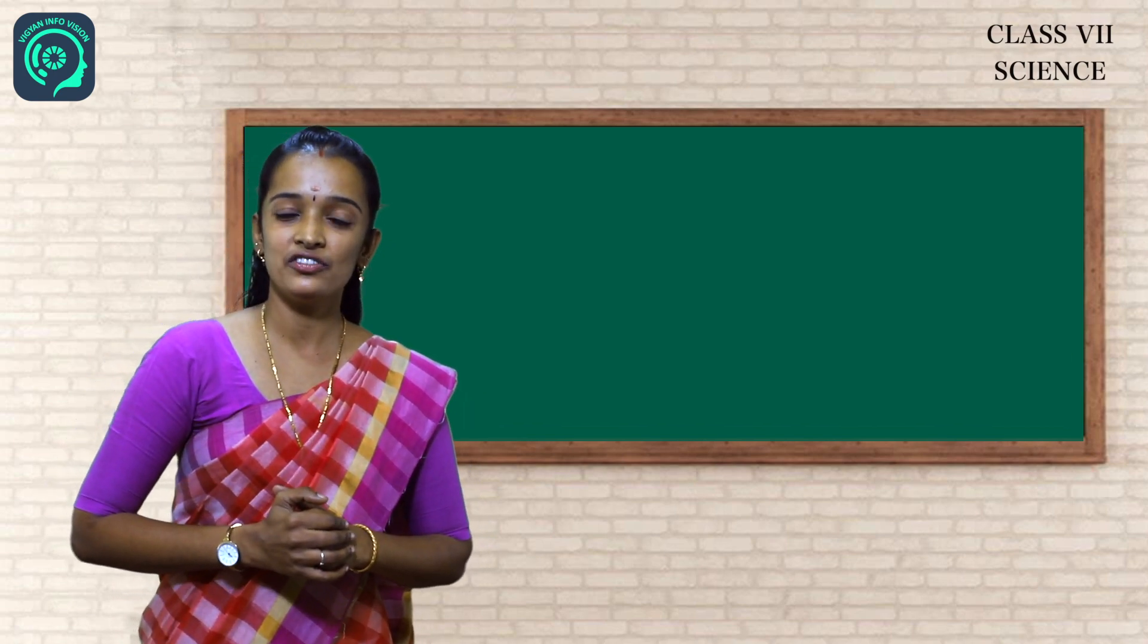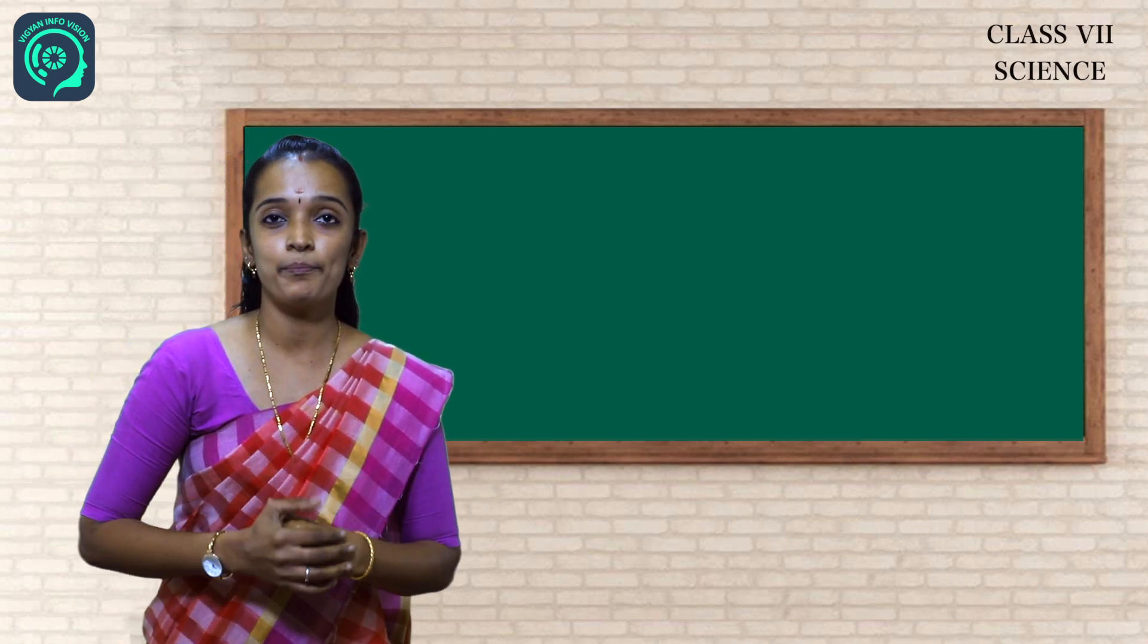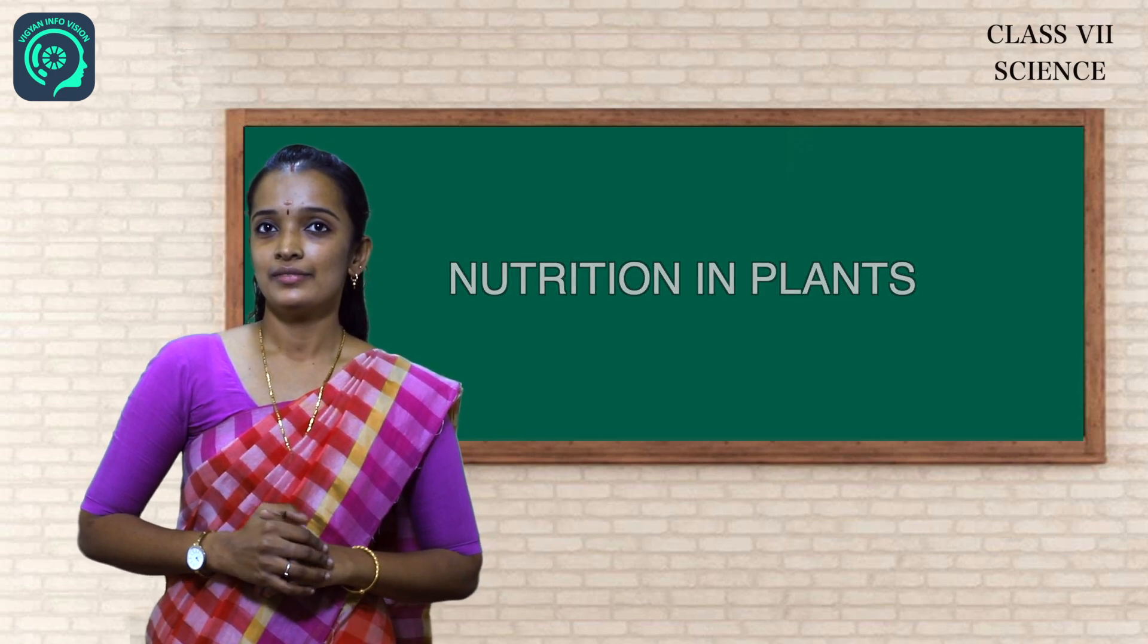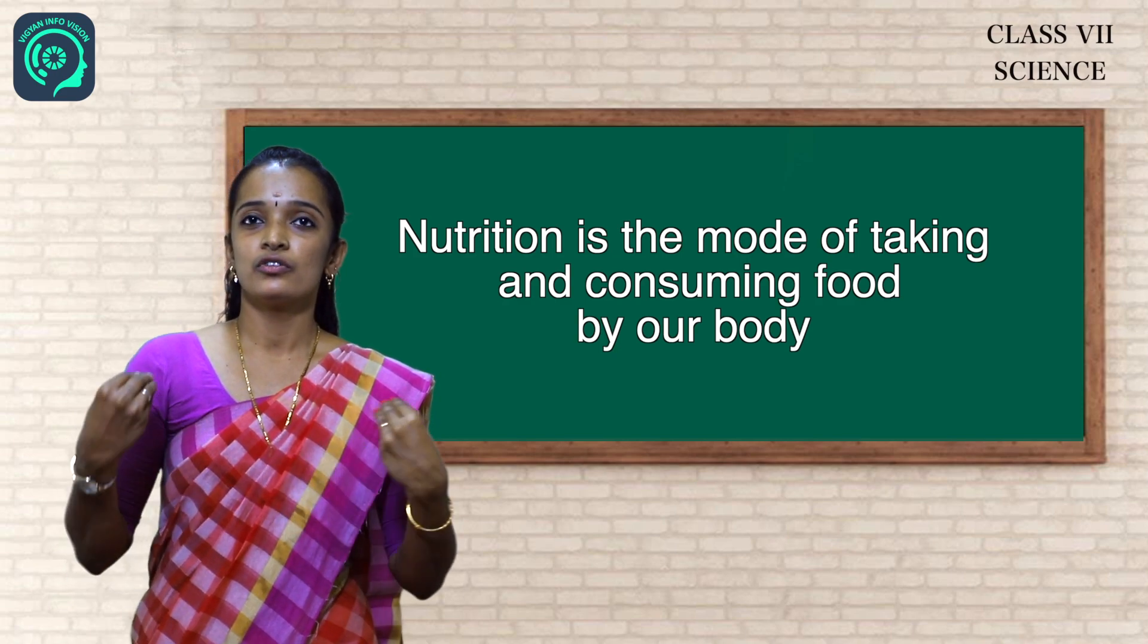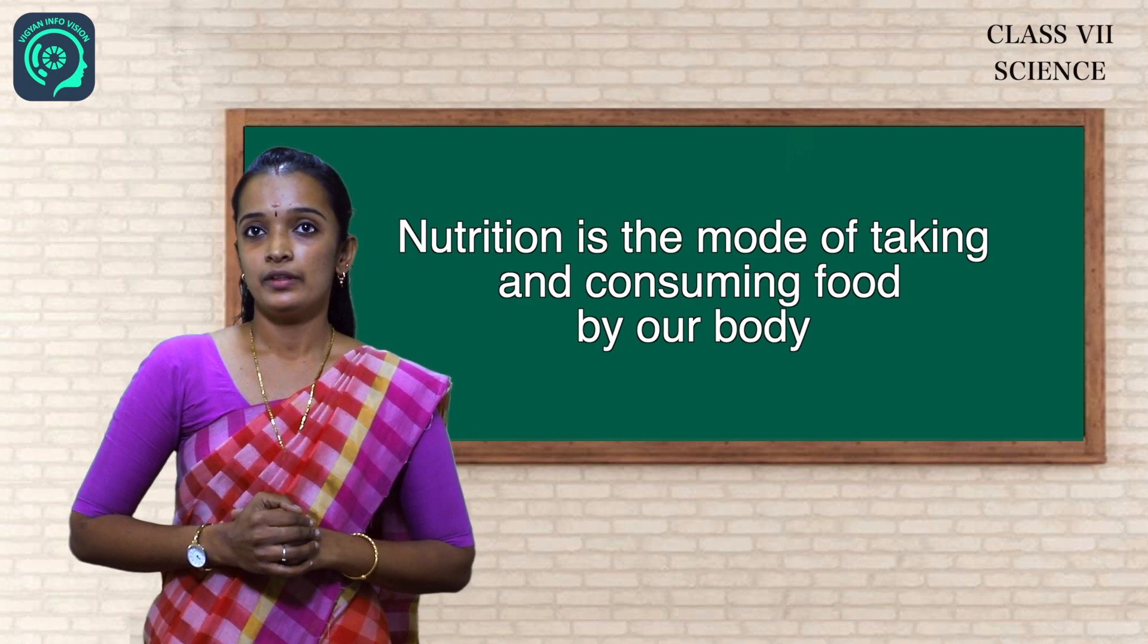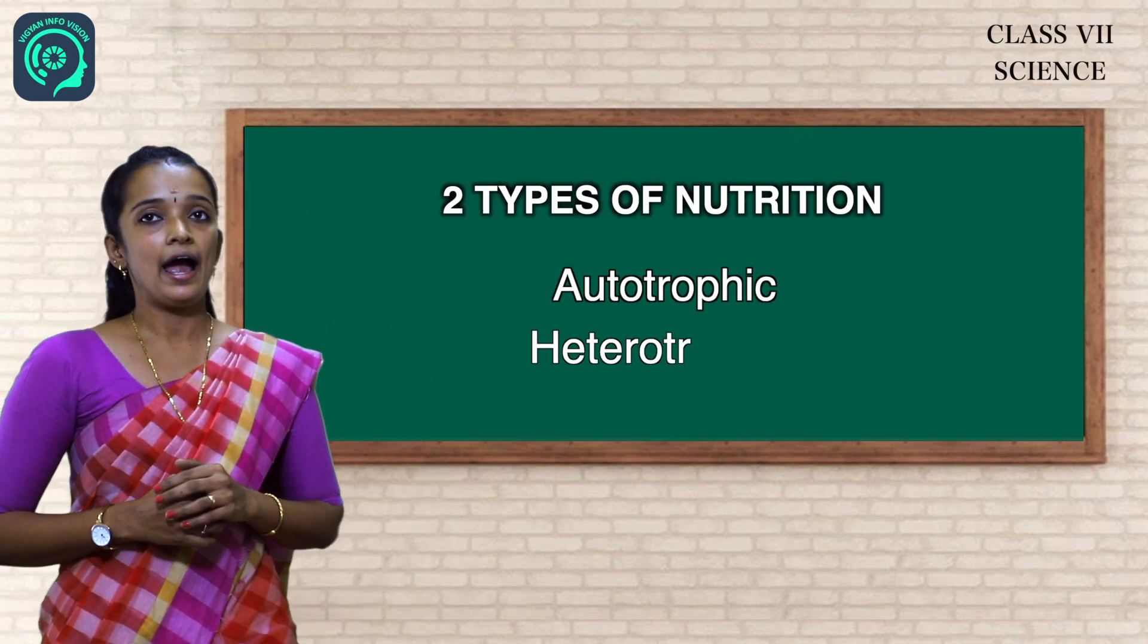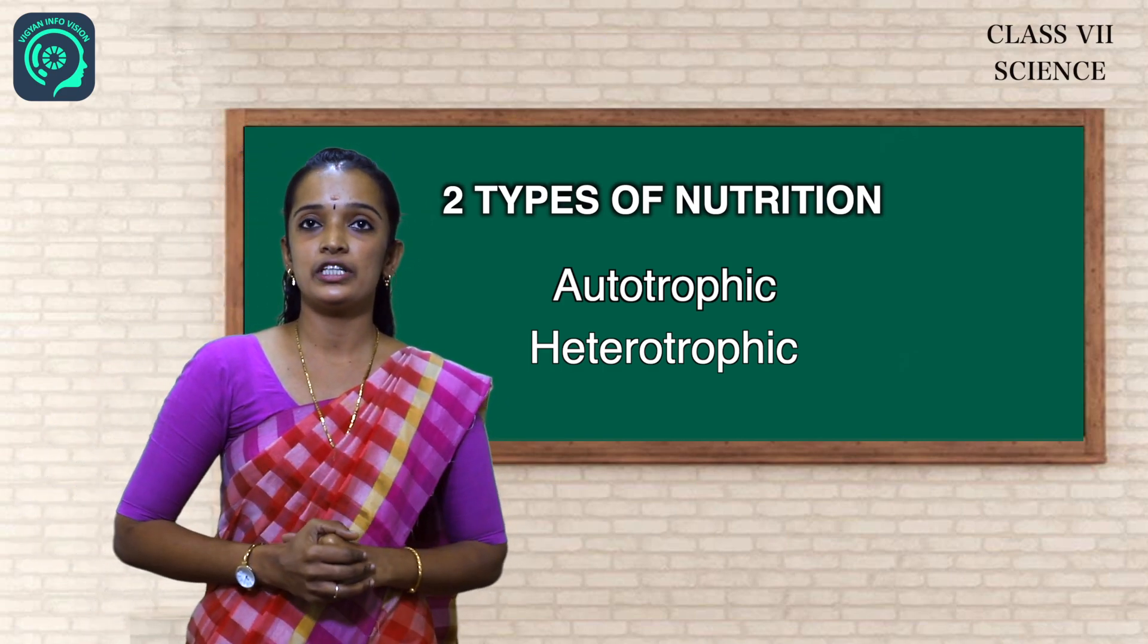Yes, we get energy from food. Where do you get food? Yes, we get food from plants. Now we are going to learn the chapter Nutrition in Plants. What is nutrition? Yes, nutrition is the mode of taking and consuming food by our body. Now we are going to learn about different types of nutrition. Nutrition are of two types: autotrophic nutrition and heterotrophic nutrition. Now we are going to learn autotrophic nutrition in detail. Autotrophs means self-feeding organisms. Mainly the plants are autotrophs.